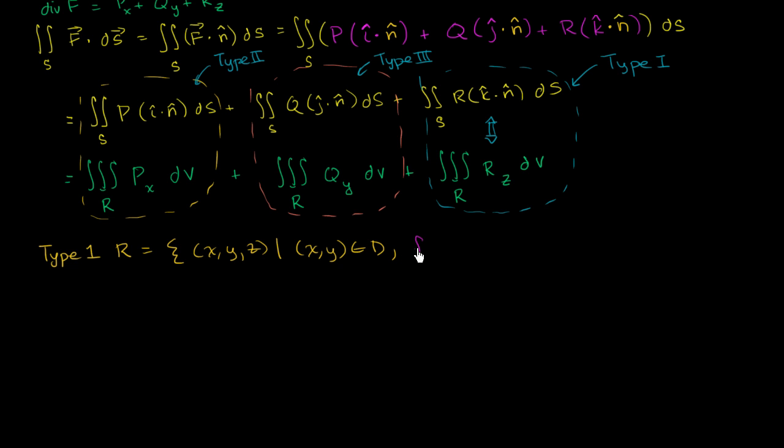z's lower bound is f1 of x and y, and that's going to be less than or equal to z, less than or equal to z, and z's upper bound, we can call it f2 of x, y. Let me close the set notation right over here, and let me just draw a general version of a type 1 region.